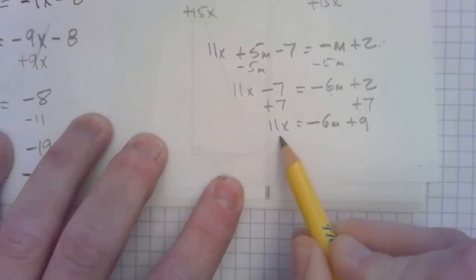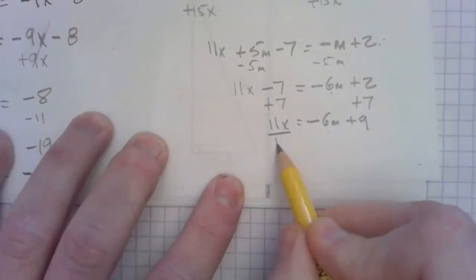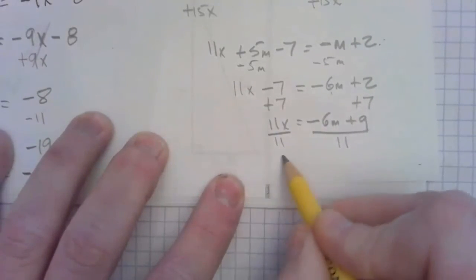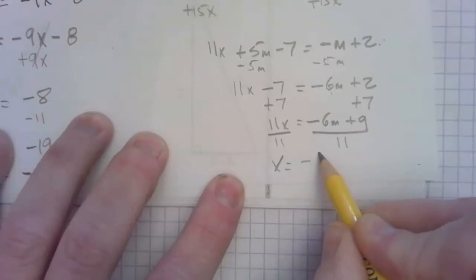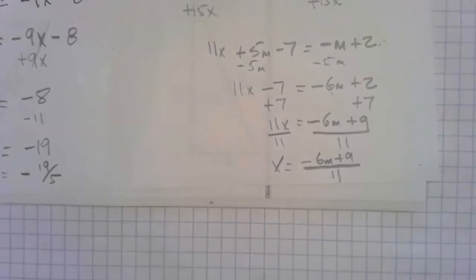I'm going to divide both sides by 11. Now in this case, there are two things over here, so what we do is we divide both sides by 11. So x comes out to be negative 6m plus 9 all over 11. Not just one of them is over 11, both of them.